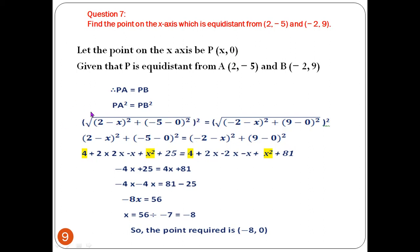The whole formula is squared because we are taking PA². Then on the other side: (-2 - x)² + (9 - 0)², and the whole formula is squared here. The square root symbol is removed when we square both sides. So we are left with (2 - x)² + (-5)² = (-2 - x)² + (9)².